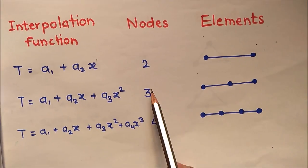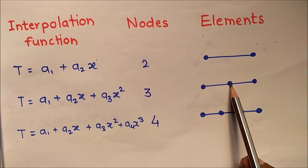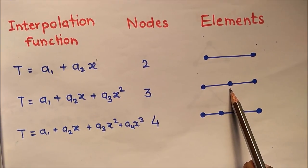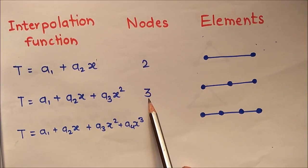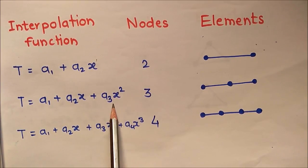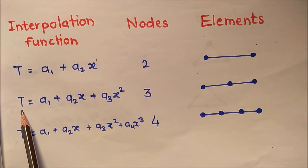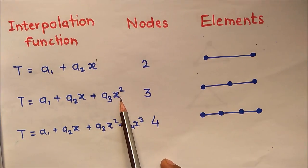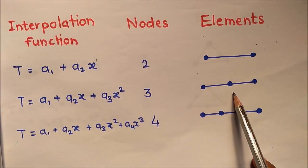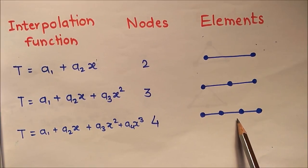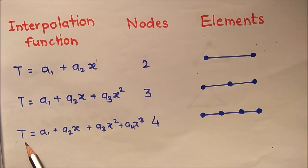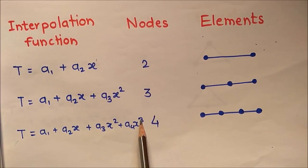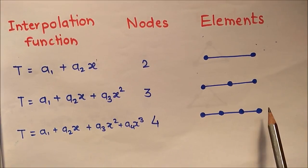Adding one intermediate node to the 1D link element increases the node count to 3 and introduces a quadratic term, making the interpolation function T = a1 + a2·x + a3·x². This is a complex element. Adding yet another intermediate node gives 4 nodes total, and the interpolation function becomes T = a1 + a2·x + a3·x² + a4·x³ — a cubic equation — also a complex element.